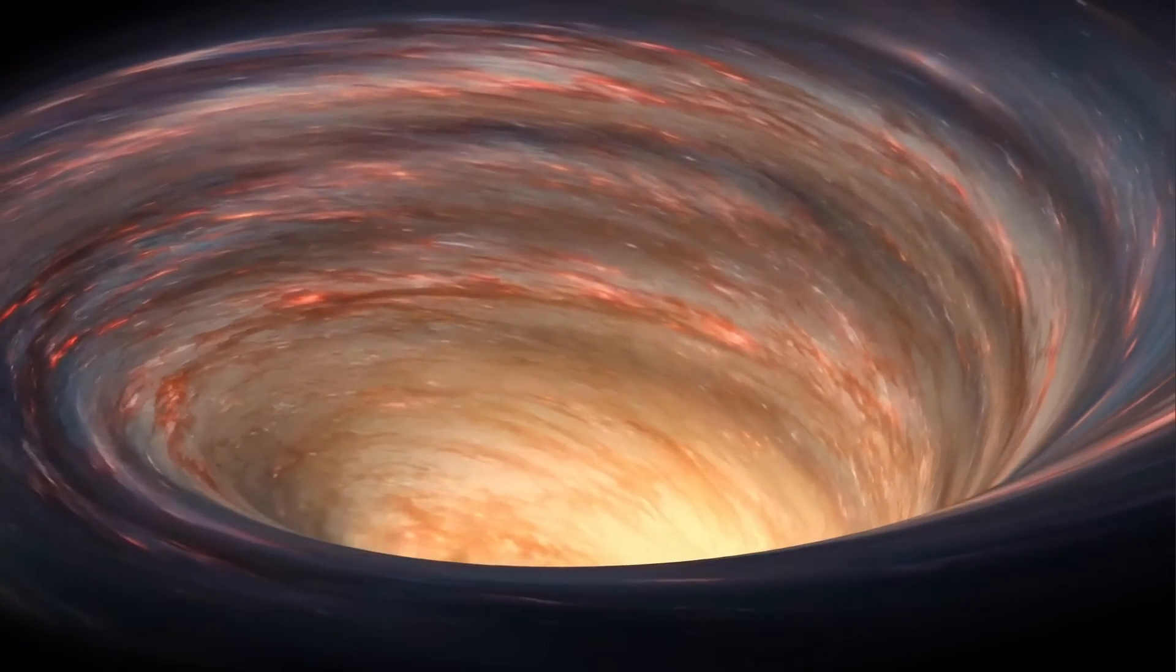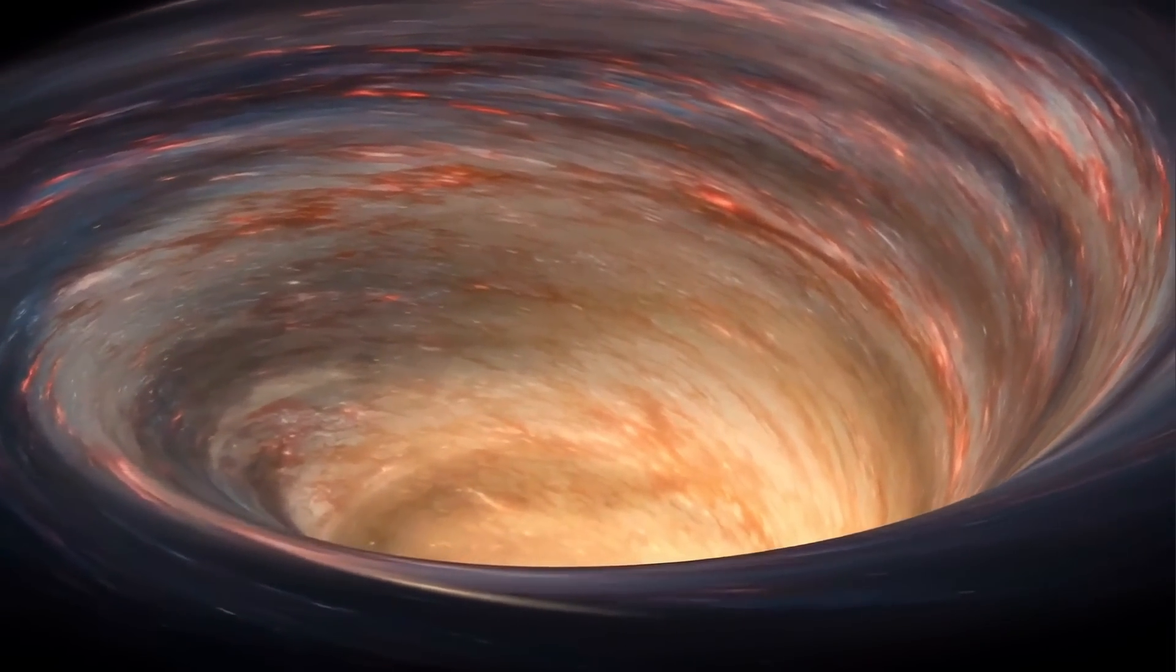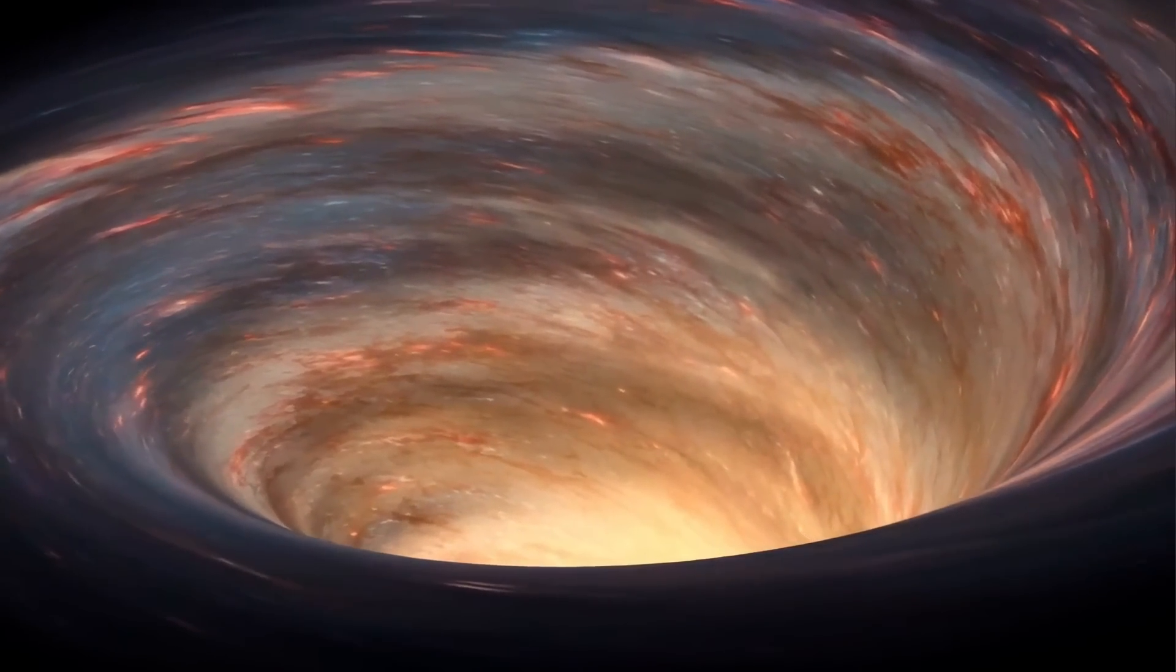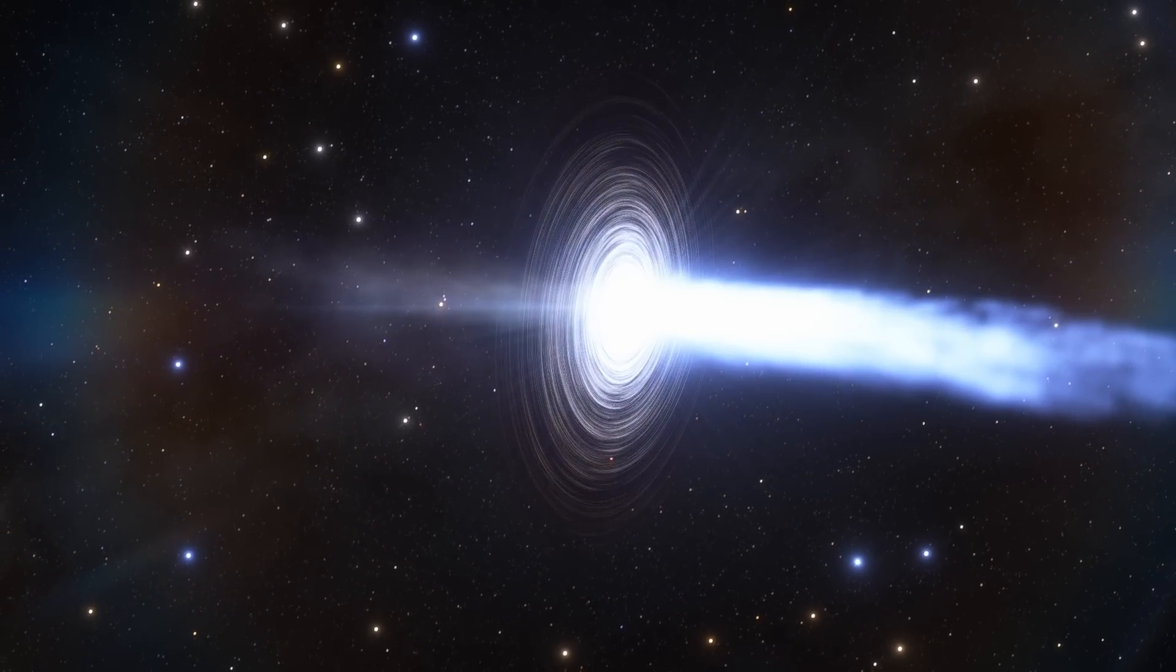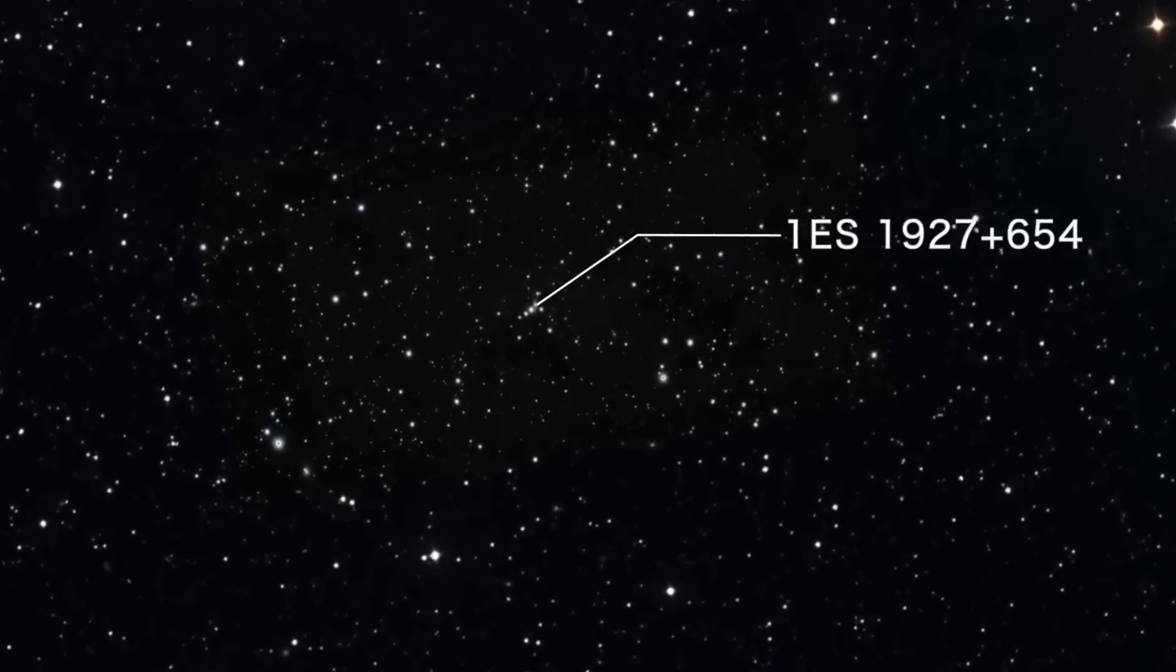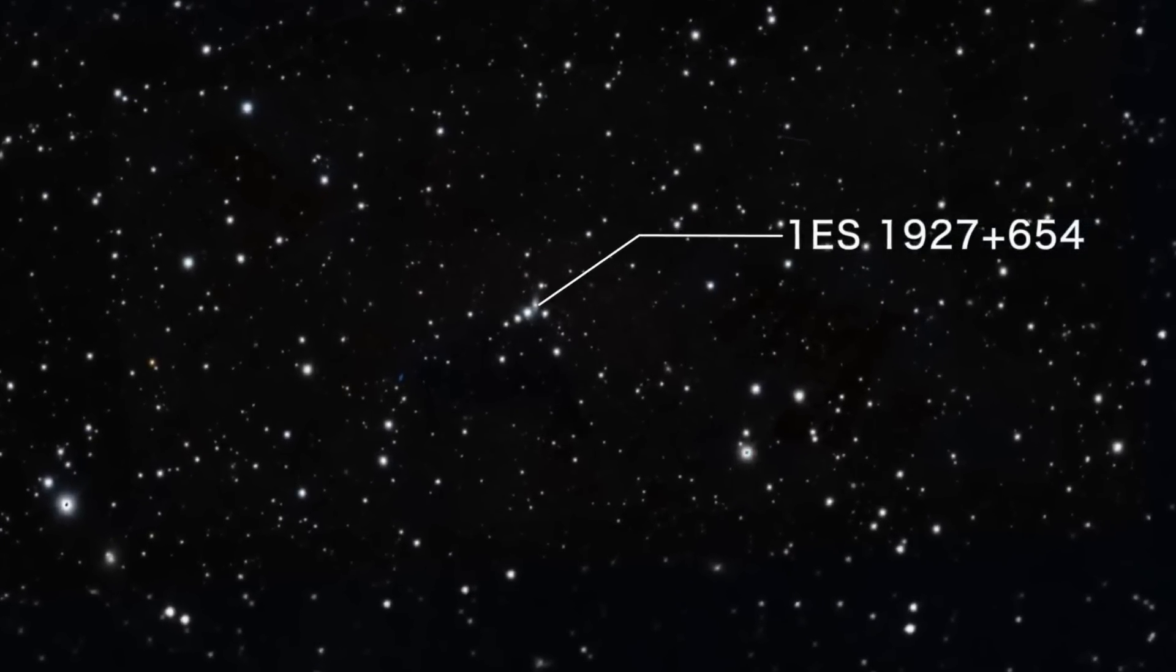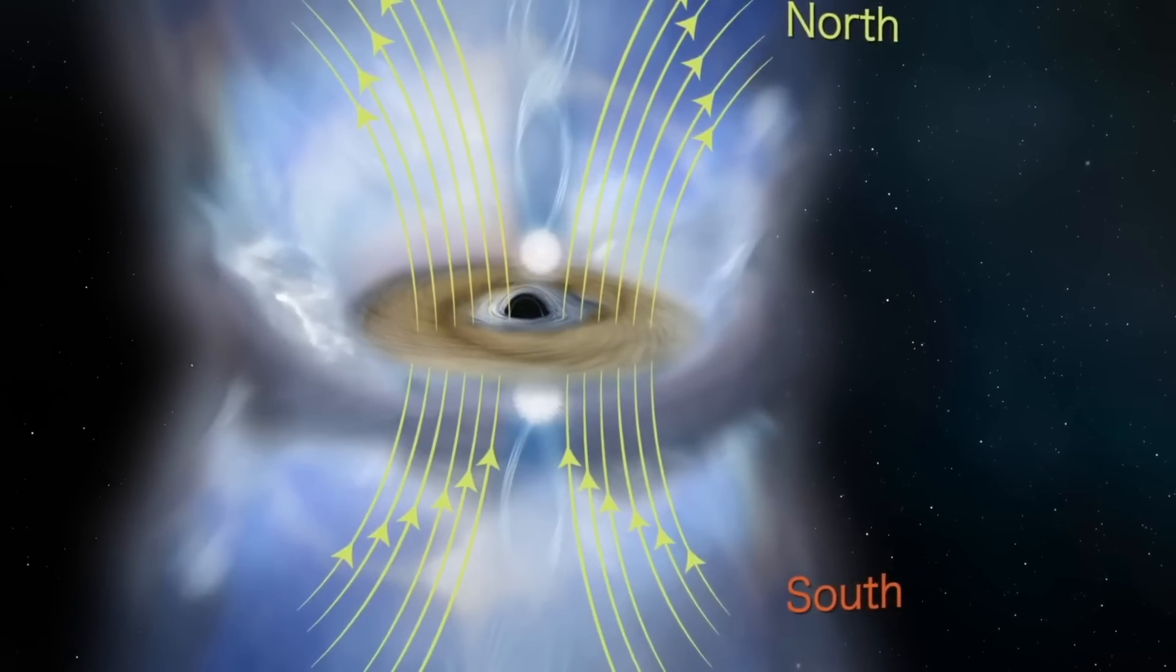But obviously we don't believe that the plasma flow or the spin of this plasma can suddenly change. It can't just suddenly reverse and start spinning the other way. Yet the observations from the black hole located in a galaxy relatively far away from us, the galaxy located somewhere right there known as 1ES 1927+654, seem to suggest so.